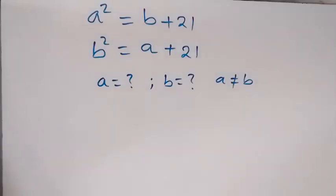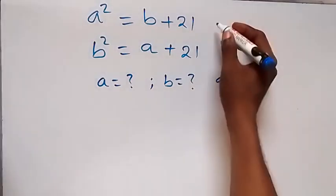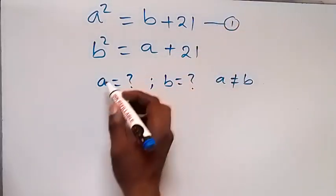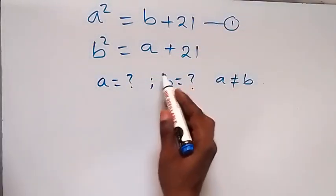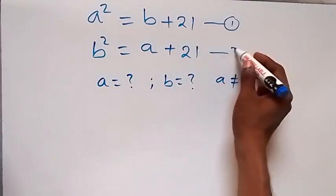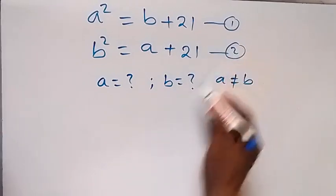Hello, you are welcome. How to solve this nice system of equations: we have a squared equals b plus 21 — let this be equation 1 — and b squared equals a plus 21 — let this be equation 2.